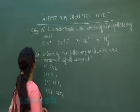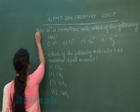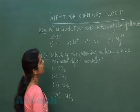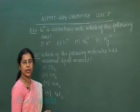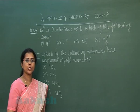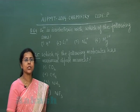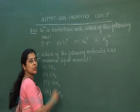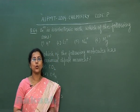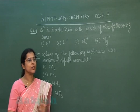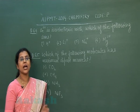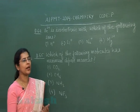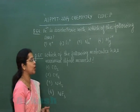Question number 64: Beryllium ion is isoelectronic with which of the following ion? Isoelectronic species are those which have the same number of electrons. In the case of beryllium ion (Be²⁺), the total number of electrons is 1, so the other species should also have only one electron.